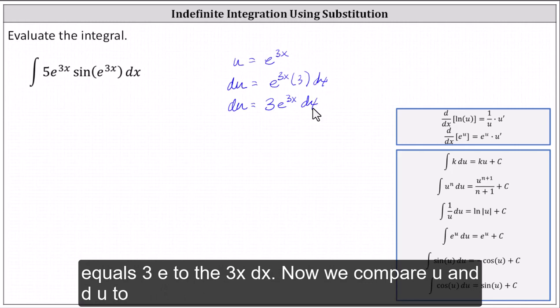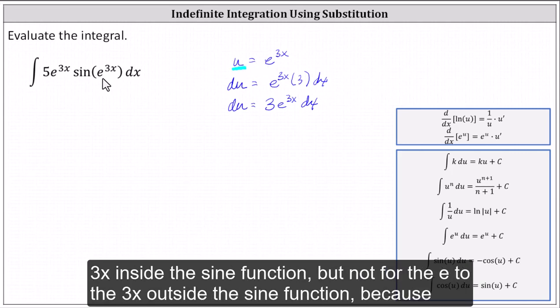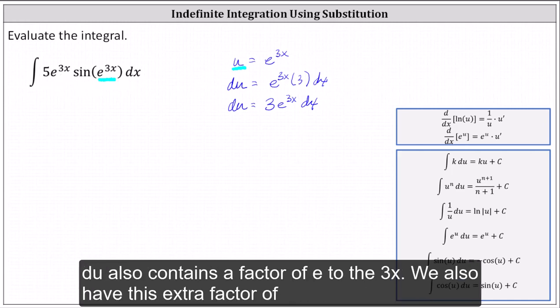And now we compare u and du to the given integral. Since u equals e to the 3x, we'll substitute u for e to the 3x inside the sine function. But not for the e to the 3x outside the sine function, because du also contains a factor of e to the 3x.